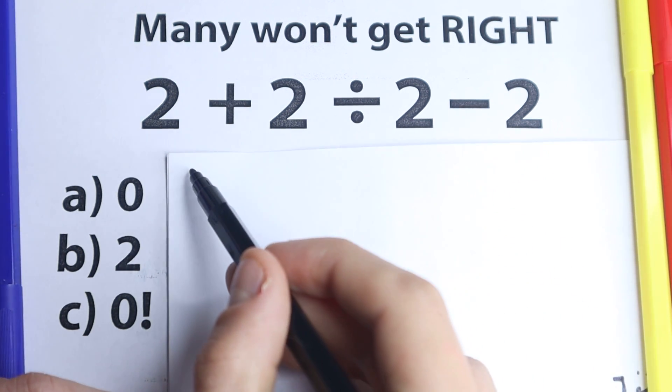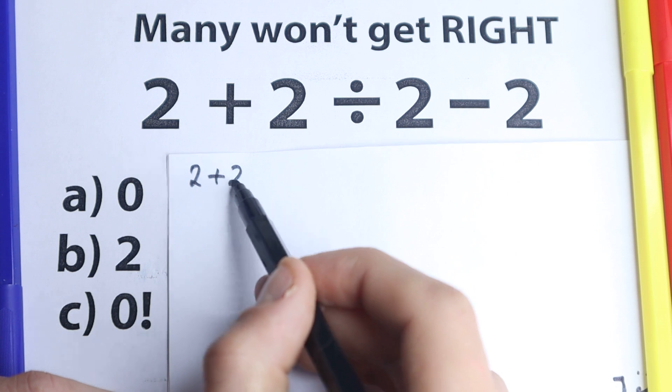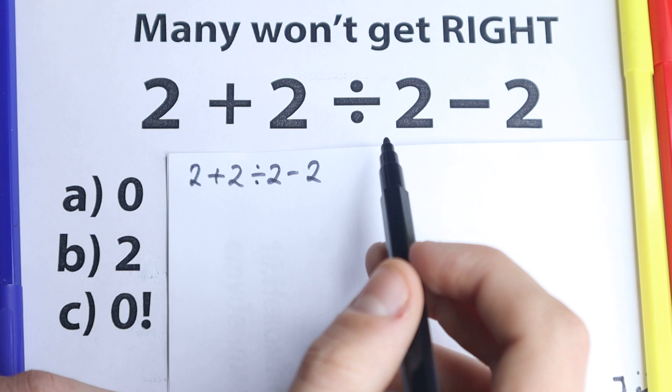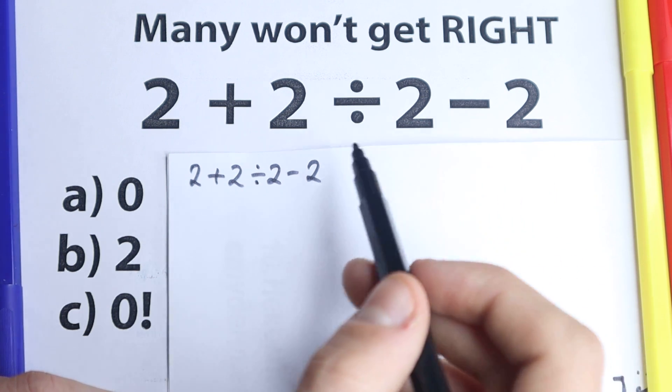Here is our question. We have 2 plus 2 divided by 2 and minus 2. One part of students solve it like that. They say, okay, let's go from left to right real quick. This is a very obvious question.